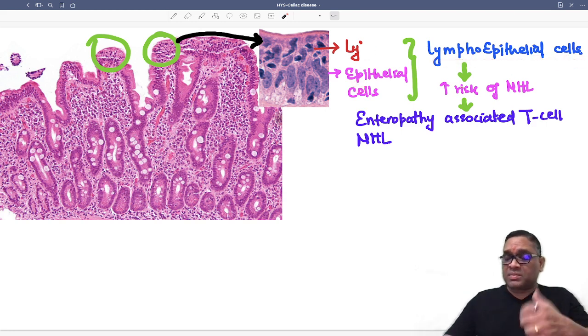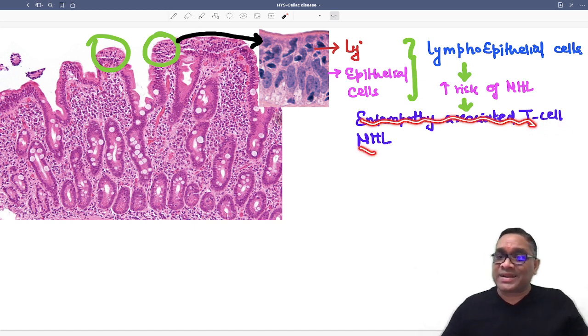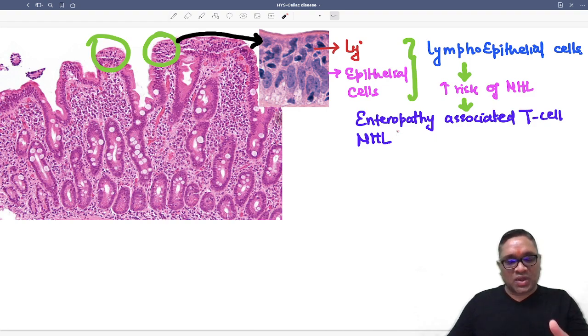What will be the prediction? Why should we know about it? Because this creates increased risk for non-Hodgkin's lymphoma. Which non-Hodgkin's lymphoma? B-cell or T-cell? Answer will be T-cell. What is the name? Enteropathy-associated T-cell non-Hodgkin's lymphoma. This is all about celiac disease. Enjoy learning.